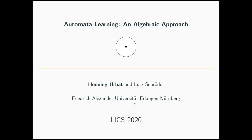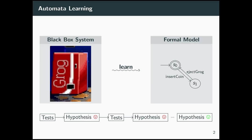Welcome to this presentation. This is about joint work with Lutz Schröder on automata learning from an algebraic and category theoretic point of view. Automata learning is about the following problem: you are given a black box system, some piece of hardware or software that you don't know any internals about, and you would like to learn a formal model of that system that accurately describes its behavior, for instance, in order to be able to apply model checking techniques to it.